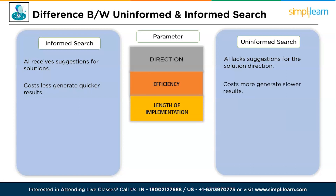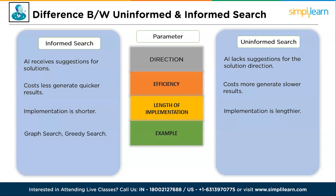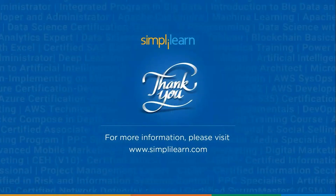The next parameter is length of implementation: informed search implementation is shorter, while uninformed search implementation is lengthier. Lastly, examples: informed search examples include graph search and greedy search, while uninformed search examples are BFS and DFS — breadth first search and depth first search. In summary, uninformed search relies solely on problem structure and actions, while informed search leverages heuristic information to guide the search process more efficiently and effectively.